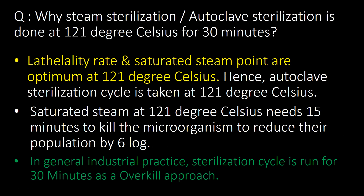Why is steam sterilization or autoclave sterilization done at 121°C for 30 minutes? The lethality rate and saturated steam point are optimum at 121°C, hence the autoclave sterilization cycle is run at this temperature. Saturated steam at 121°C needs 15 minutes to kill microorganisms and reduce their population by six logs. In general industrial practice, the sterilization cycle is run for 30 minutes as an overall approach.